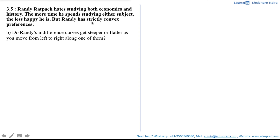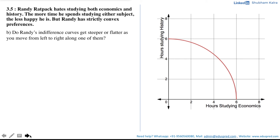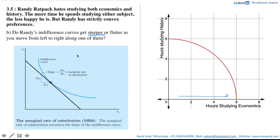Now moving to part B of this question: do Randy's indifference curves get steeper or flatter as you move from left to right along one of them? From the previous part, this was the indifference curve for Randy. As you can clearly see, the graph is getting steeper as you move from left to right. If you are not able to figure this out visually, here is another method: whenever we talk about a graph being steeper or flatter, we are talking about the slope of the indifference curve, which is nothing but your marginal rate of substitution.